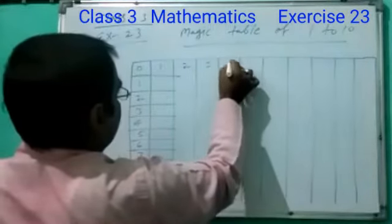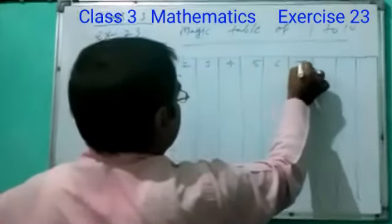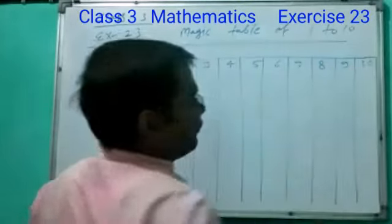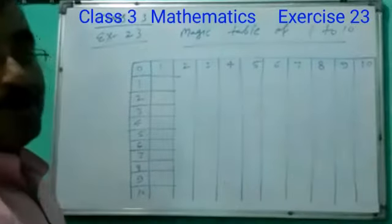Here you write 0, 1, 2, 3, 4, 5, 6, 7, 8, 9, 10. Also here you write 0, 1, 2, 3, 4, 5, 6, 7, 8, 9, and 10.